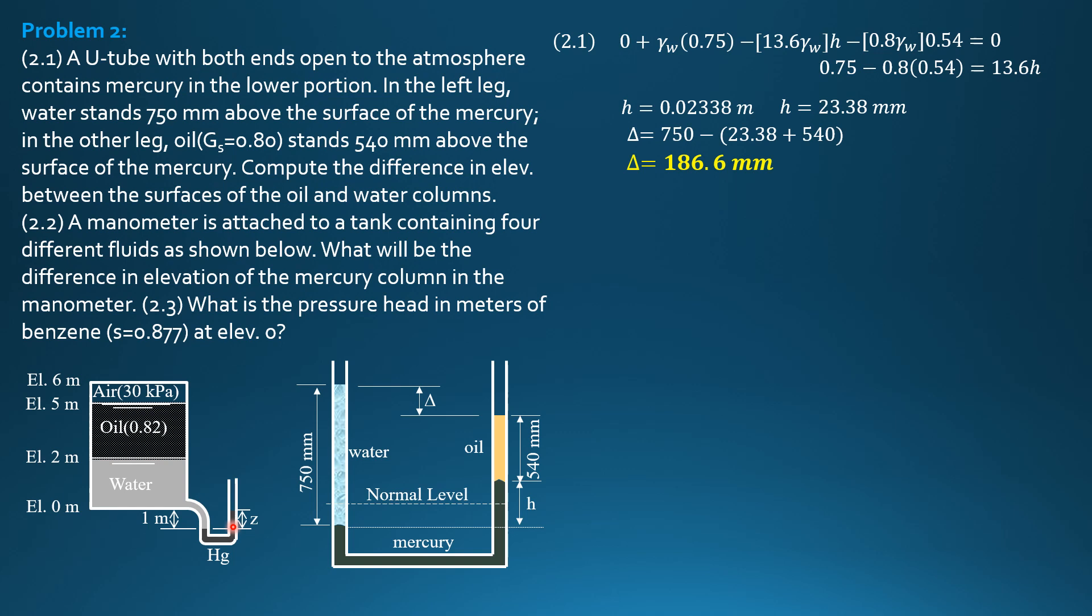Then we go up. So minus specific weight of mercury times Z. And this point is exposed to the atmosphere, so our pressure is zero. So let's do that. Beginning here, 30. 3 plus 0.82 times 9.81, specific weight of water, times 3 meters to reach this point.